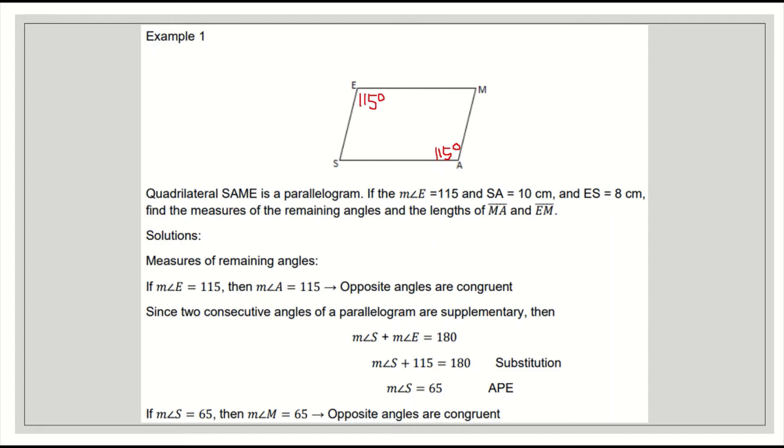Since two consecutive angles of a parallelogram are supplementary, then if we add the measure of angle S and angle E equal to 180, this will become: measure of angle S is unknown and angle E is 115 equals 180. Transpose to the other side, it will become 180 minus 115 is 65. Therefore, angle S is 65 degrees. So if angle S is 65 degrees, of course angle M is also 65 degrees.